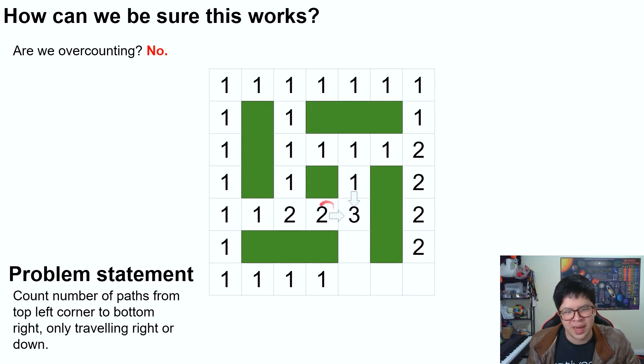because by definition, this is the distinct number of ways to get to a certain cell. And there's no way a path can go through both of these two. So we're not over counting.